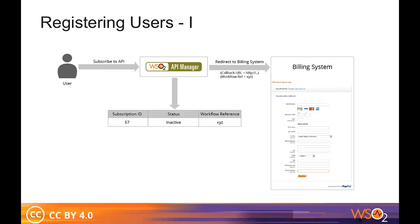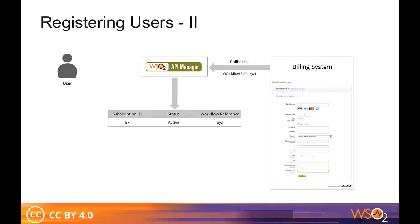When the redirection happens, the workflow sends the billing system a callback URL and the reference ID. In the billing system's user registration page, the user must enter their credit card and other required information for invoicing purposes. Once successfully registered, the user is redirected back to the API store. When the user is redirected back, the billing system sends the callback URL that was sent when making the initial request, along with the workflow's reference ID. Through this reference ID, the API store knows which subscription to activate. If the user account creation is successful, the subscription is set to an active state so that the user can start consuming the API.